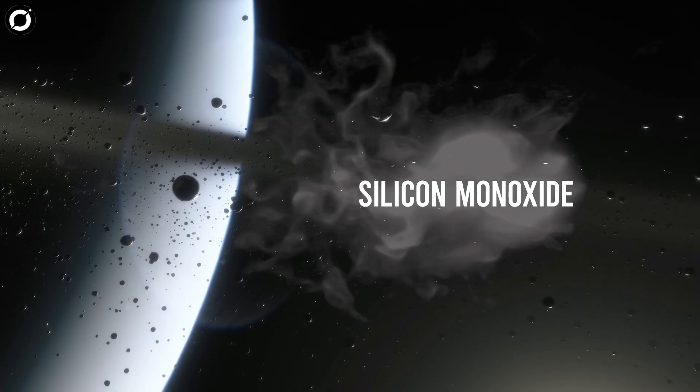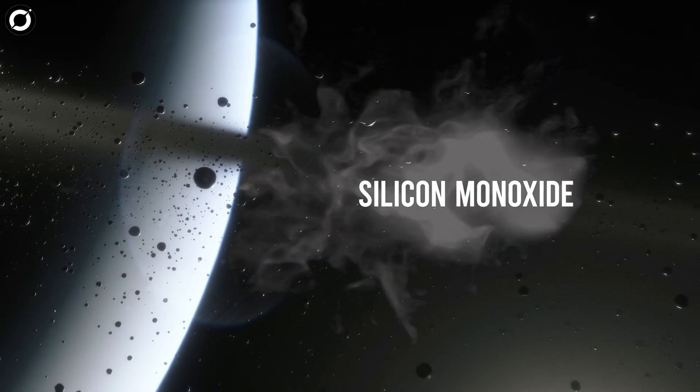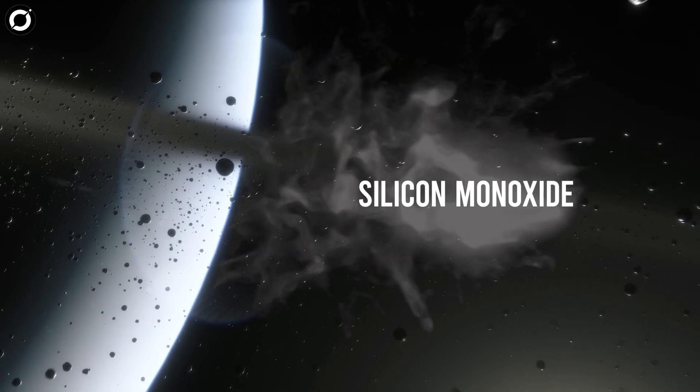This dust, in the form of silicon monoxide, created a dark veil around Betelgeuse, causing it to dim significantly.